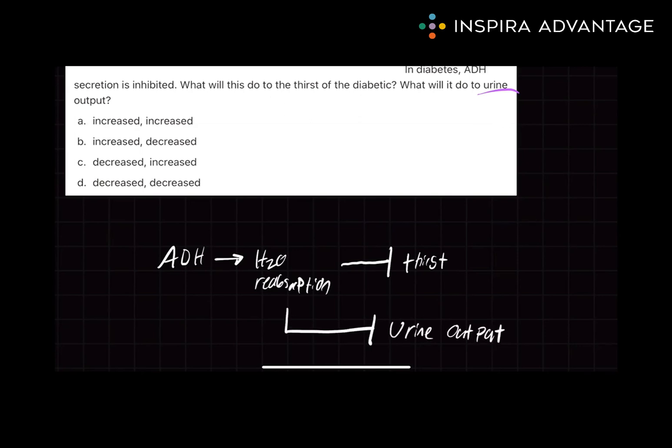Okay. So now that we understand the relationship that ADH typically has between thirst and urine output, we have to now add in what the question is asking of us. We're inhibiting ADH. So let's just say that X is inhibiting ADH. Well, logically, let's follow what this does. If X inhibits ADH, it's also going to inhibit water reabsorption. So in this case, we're inhibiting the inhibitor, which is going to ultimately cause an increase in thirst and an increase in urine output. And this allows us to perfectly match to answer choice A.